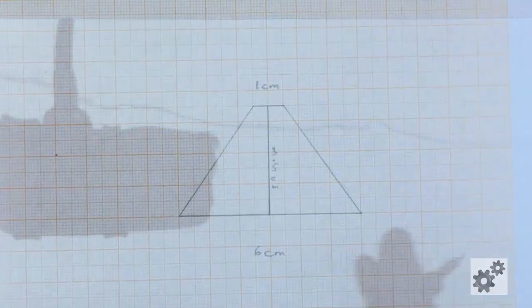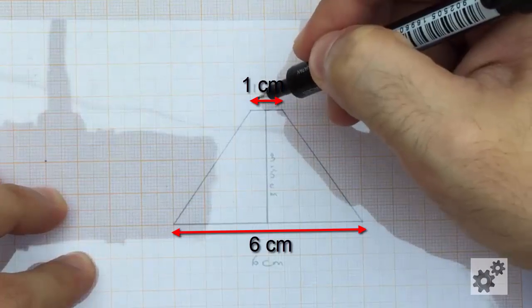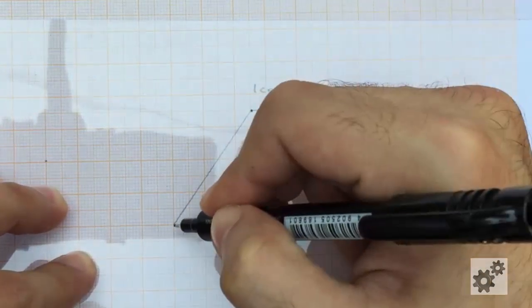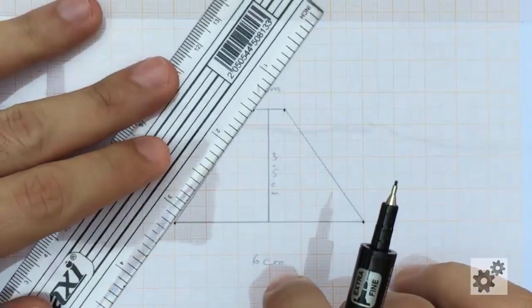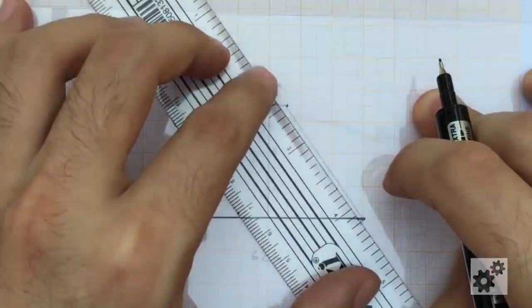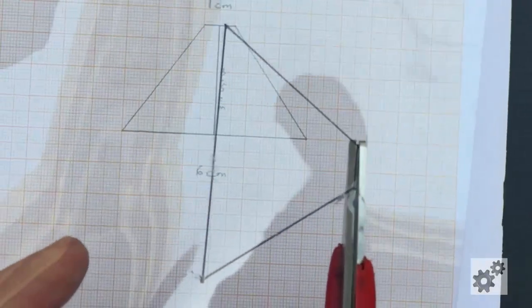We need to make a shape like this. These two lines are 6 cm and 1 cm, and the distance between them is 3.5 cm. Once this shape is done, cut it out using scissors or a cutter.